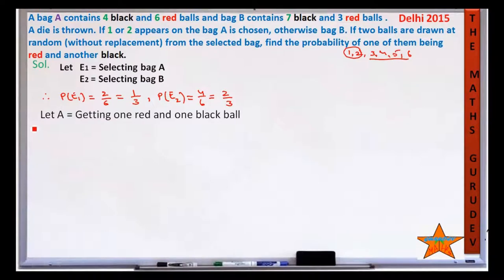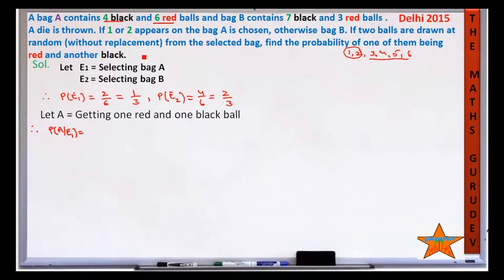So P(E1) = 1/3, which means P(E2) = 1 - 1/3 = 2/3. Now we calculate P(A|E1), the probability of getting one red and one black ball from bag A. Bag A has 4 black and 6 red balls, total 10 balls, so we choose 2 from 10.